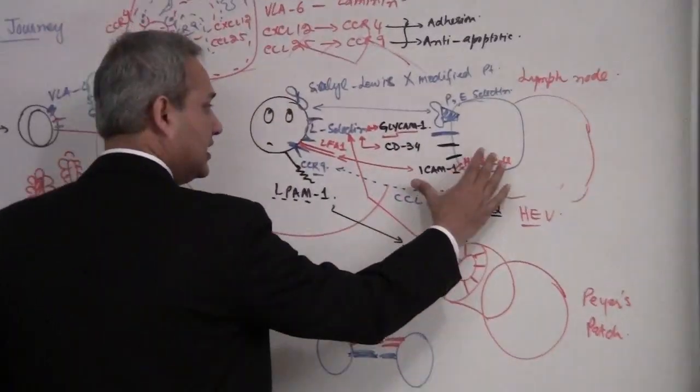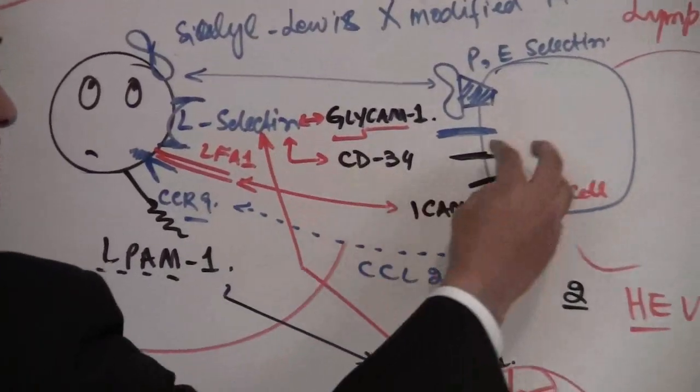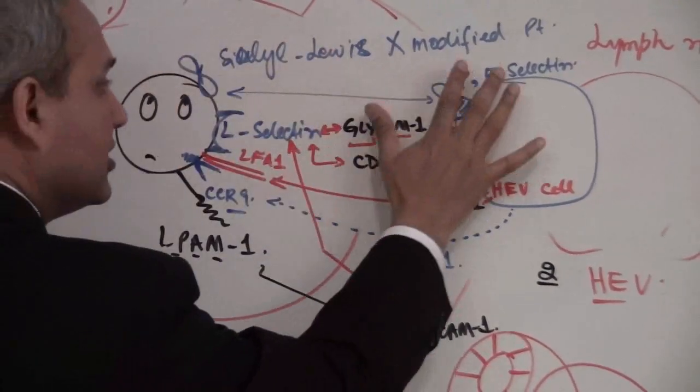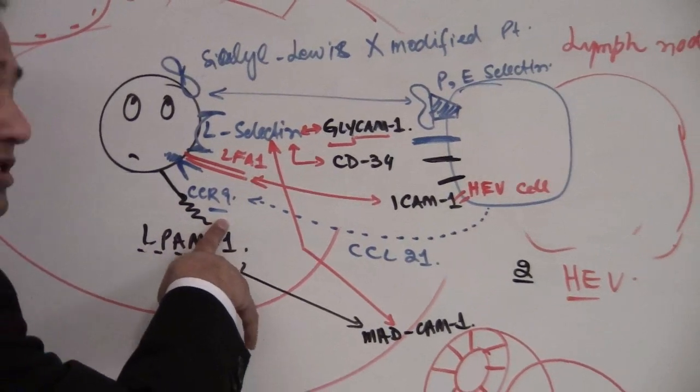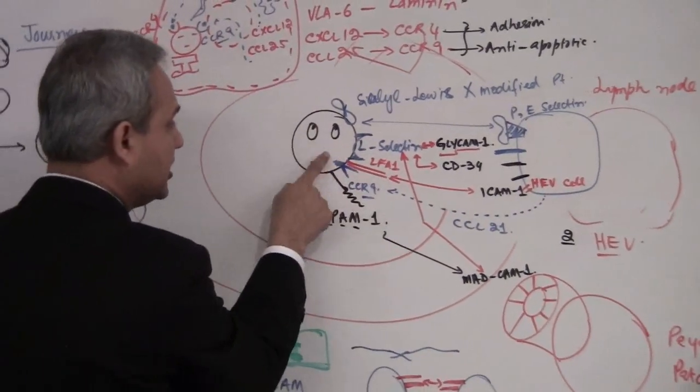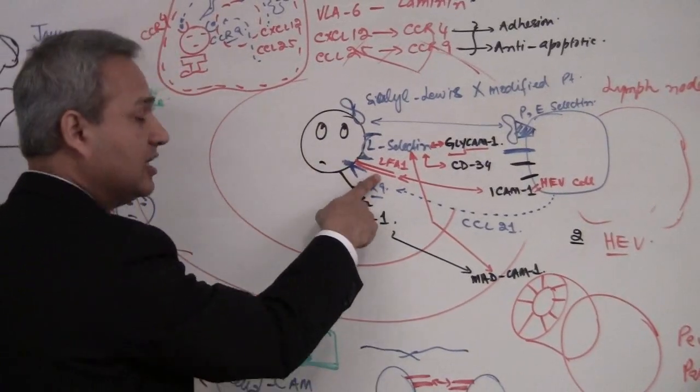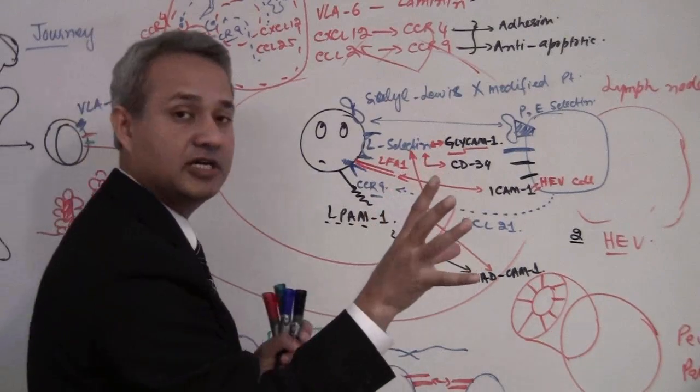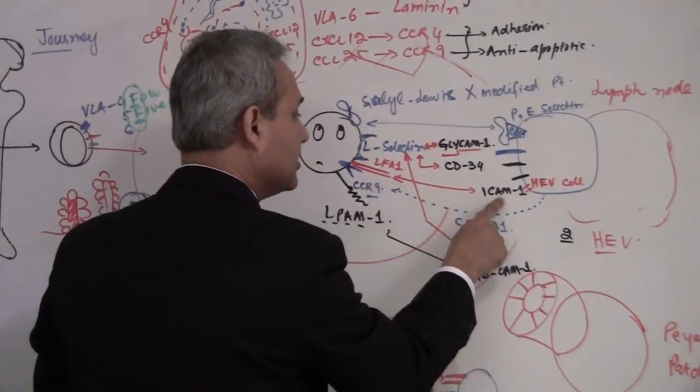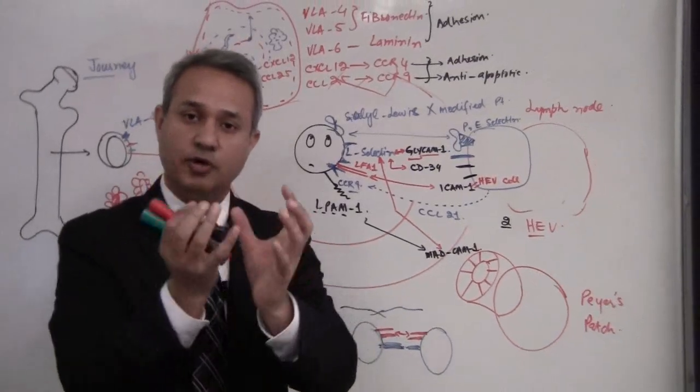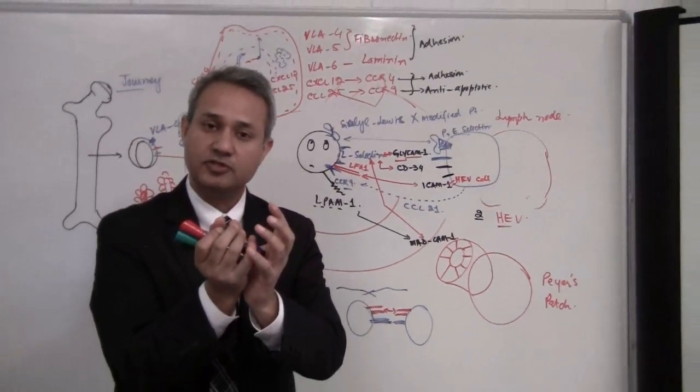This cell is continuously sending messages out. And as soon as a T cell is found in this area and that chemokine receptor 9 gets activated, that causes a conformational change which then causes the integrin LFA1 to become activated, and that would then attach it to ICAM-1. Of course, that causes the stopping of the lymphocyte.